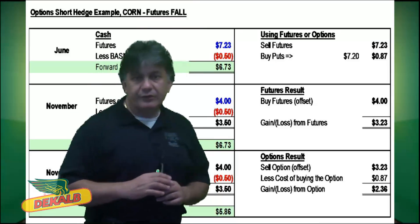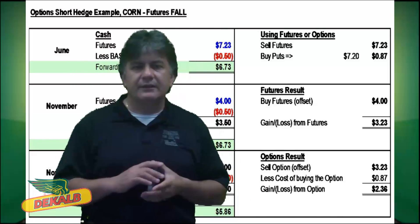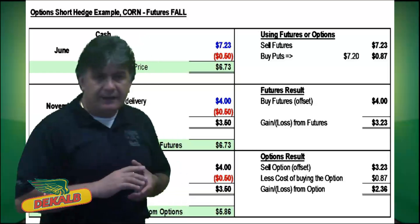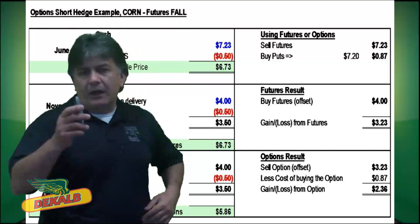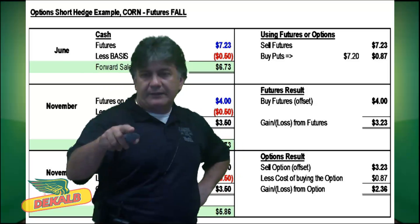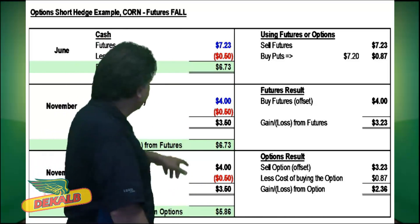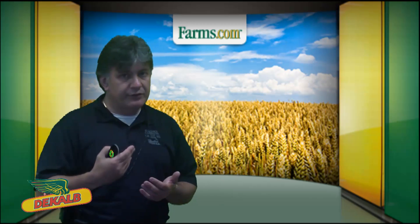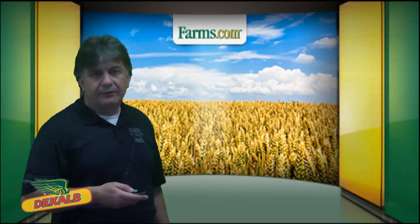Let's go through an example with corn where futures are falling. We're assuming futures are at $7.23 today. Your basis is minus 50 cents, so you've got a net price of $6.73. You can short futures at $7.23, or buy that put for 87 cents. If the price falls to $4 by November, less the basis, that cash price is $3.50. You're going to buy back futures at $4 — you've sold them at $7.23 — so you gain $3.23. Less the cost of the option, the option side gains $2.36. Add that back to your cash price at harvest and you get a net of $6.36. Selling futures works when the underlying commodity futures price is falling, and options also work in this case because you expected the price to fall, and it did.